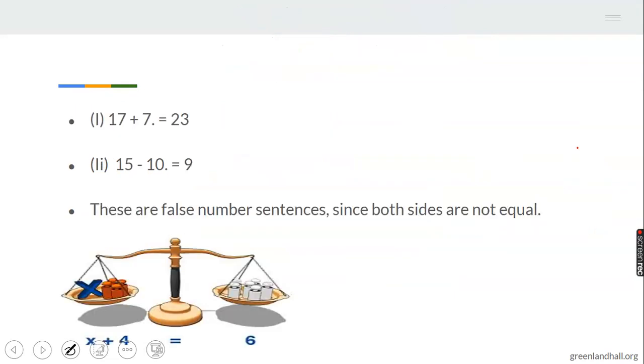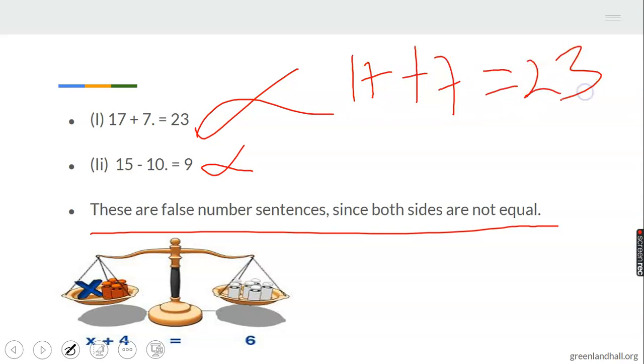Now we also have 17 plus 7, will that give us 23? No, that's wrong. 15 minus 10, will it give you 9? Nope, that's wrong. These are false sentences since both sides are not equal. Let's look at it: 17 plus 7, you know 7 plus 7 is 14, carry the 1, then we have 24. Is 24 equal to 23? No, you can see it is not equal to each other, so it is false.